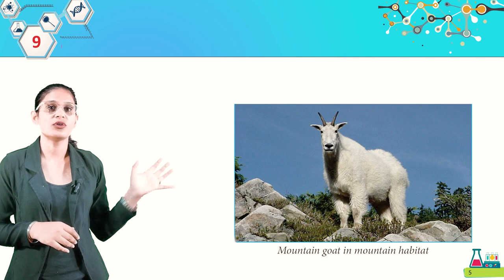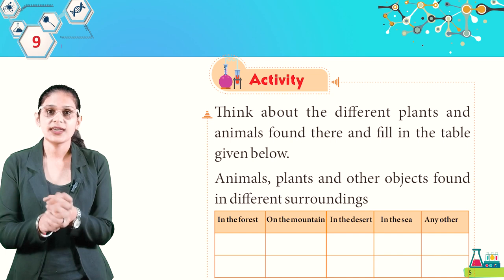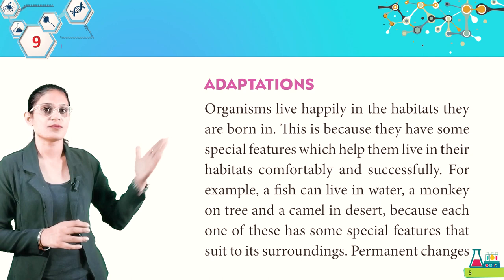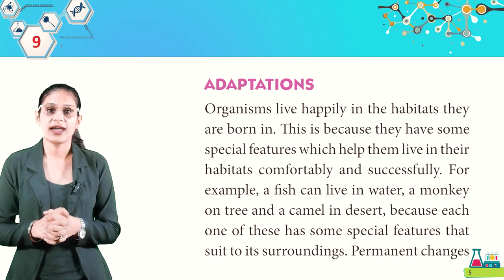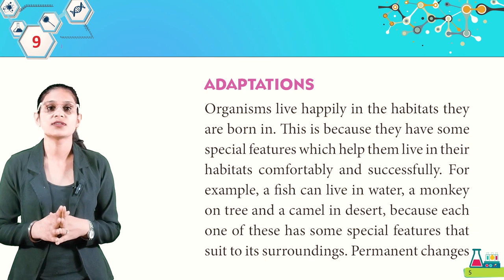You have learned about different types of habitats. Now we will discuss adaptations. Organisms live happily in the habitats they are born in because they have special features which help them live comfortably and successfully. For example, a fish can live in water, a monkey on a tree, and a camel in a desert, because each has special features suited to its surroundings.